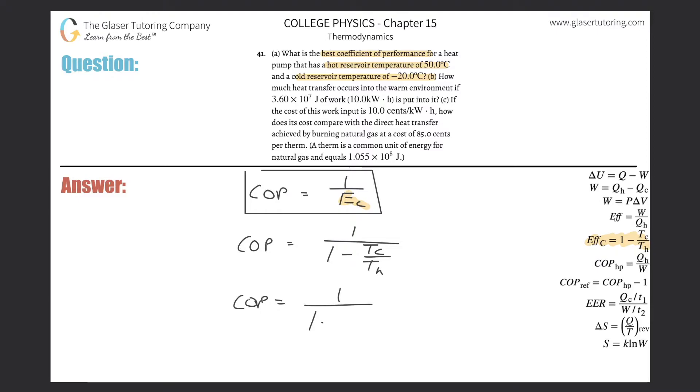So there's going to be one divided by one minus temperature of the cold. They told us was negative 20. Remember, we need this in Kelvin, so you've got to add the 273. Divided then by the hot, which was 50 degrees Celsius, add the 273, and voila.